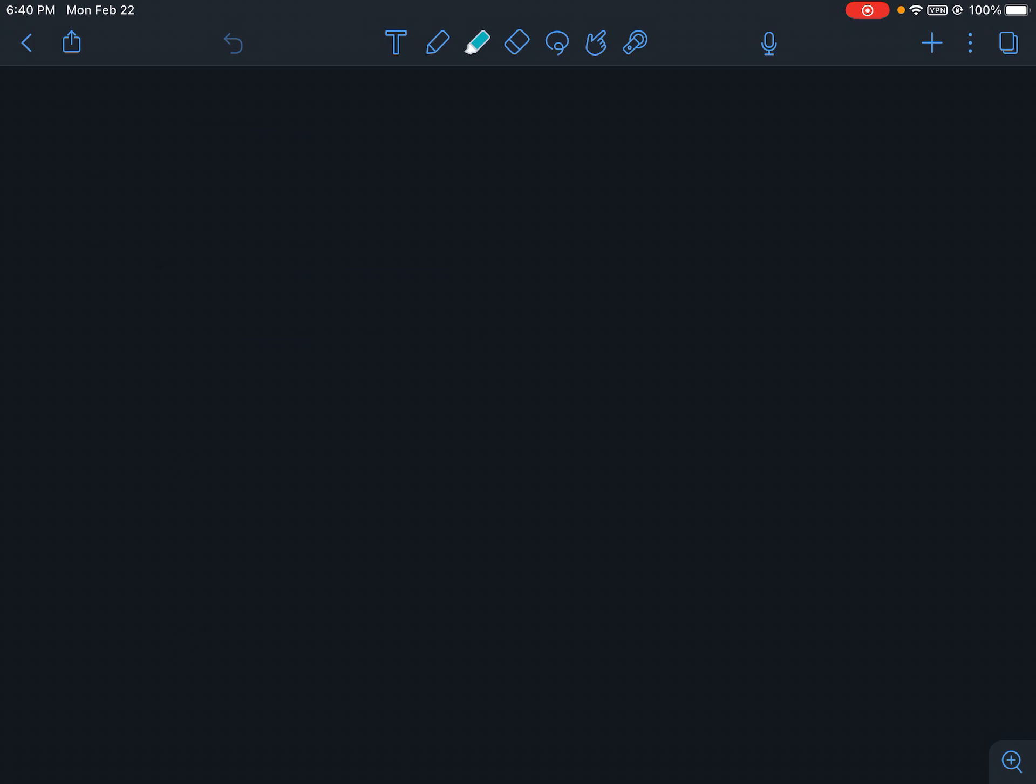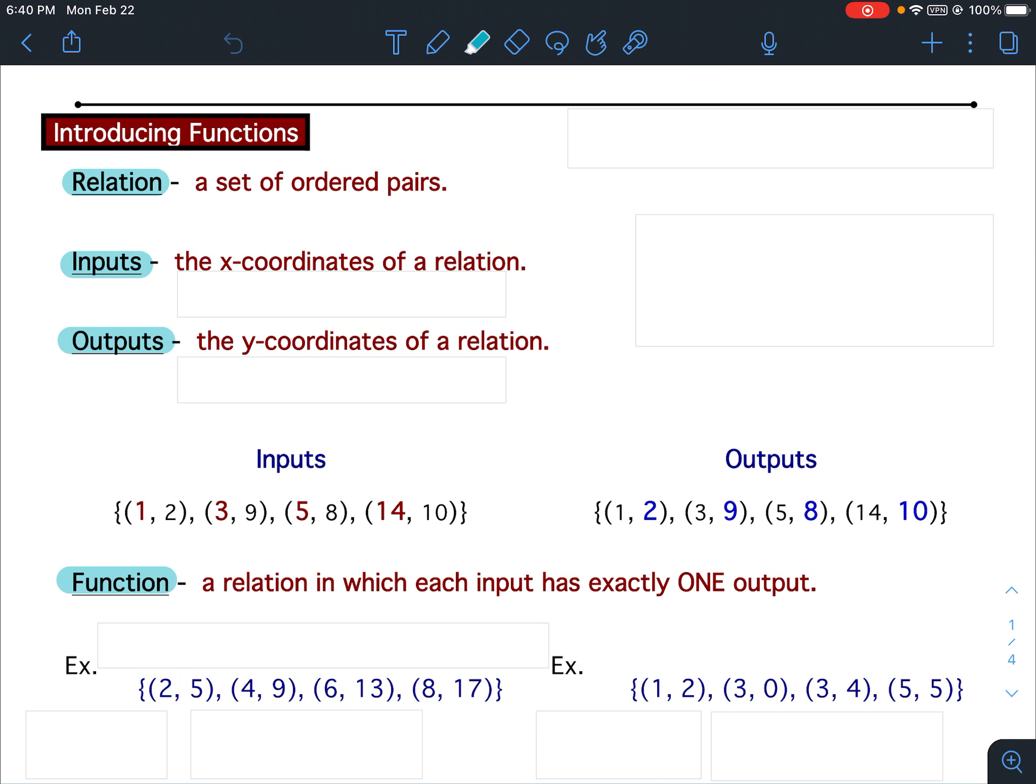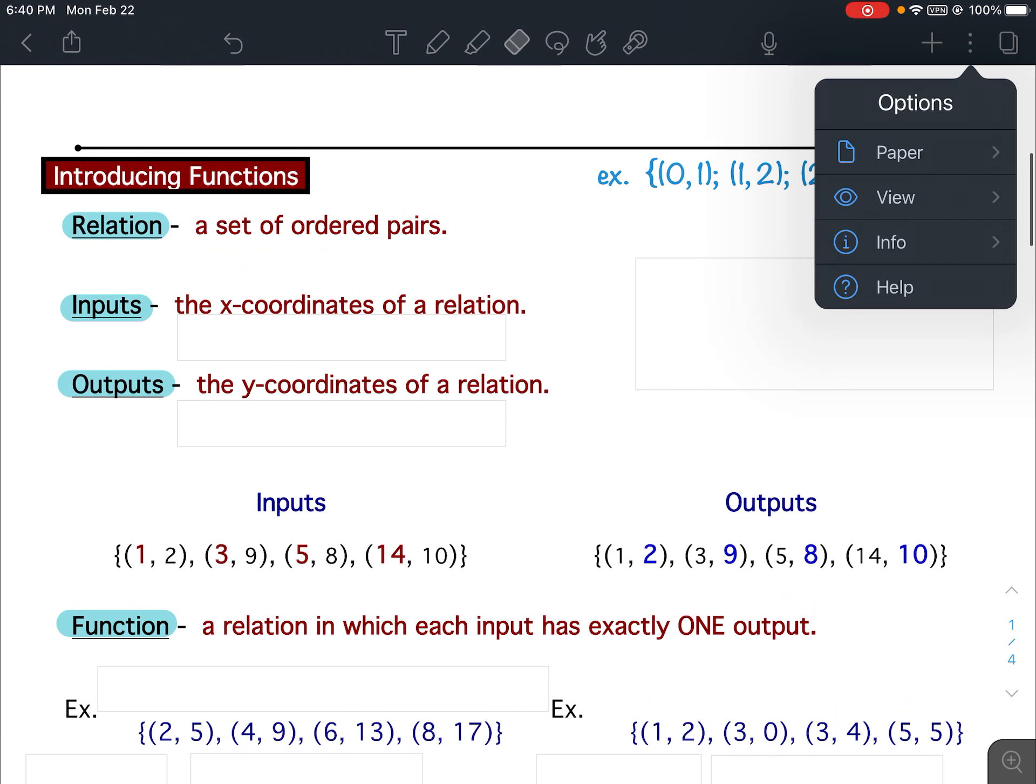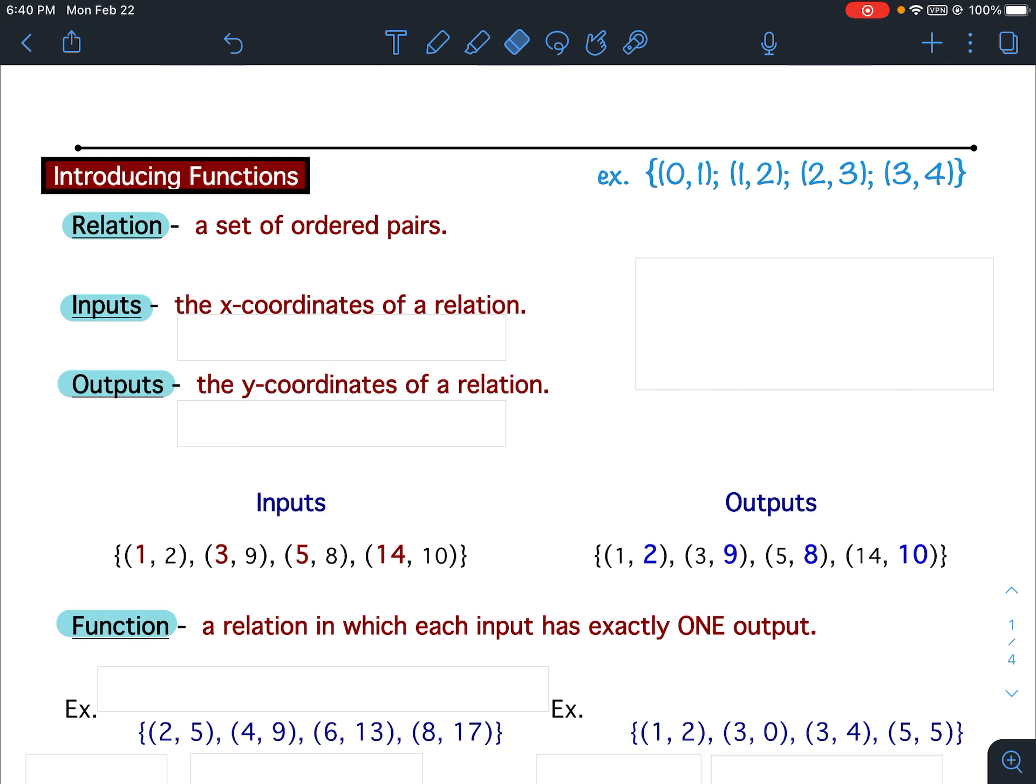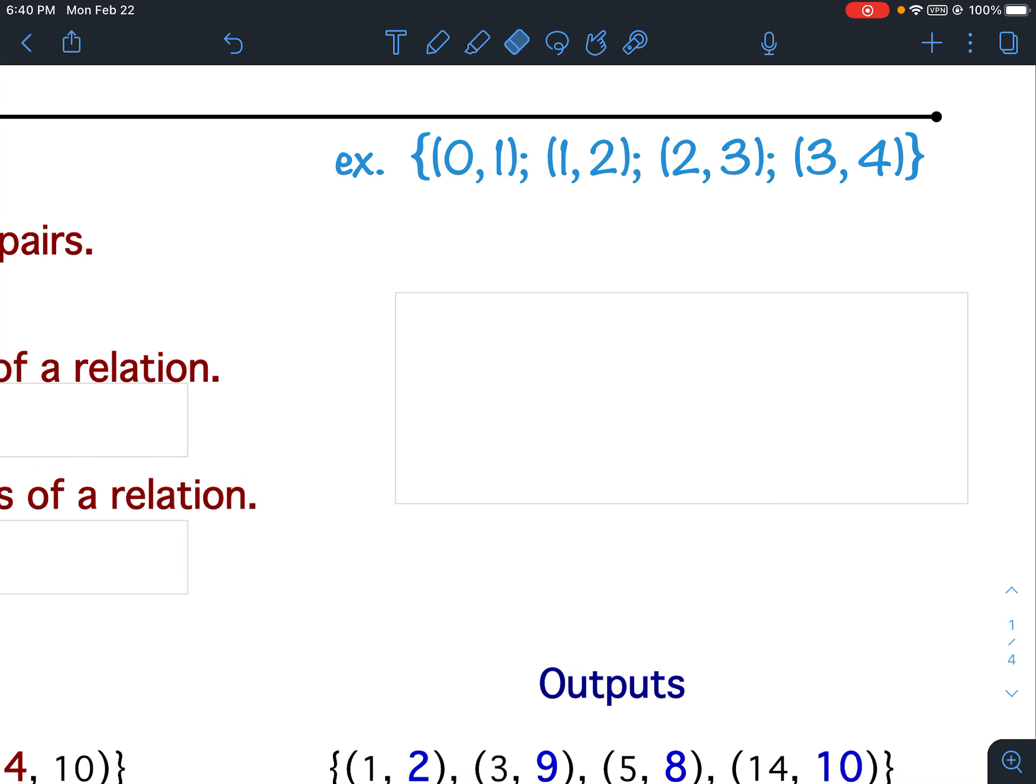So, now back to the notes. Now that we know what a set of is, up underneath the line that is right up here, write down this example. So, a set of ordered pairs could look like... a set of ordered pairs. An example would be (0, 1), (1, 2), (2, 3), and (3, 4). And that's just an example of what a relation would be, a set of ordered pairs. Pause your video and get that written now.